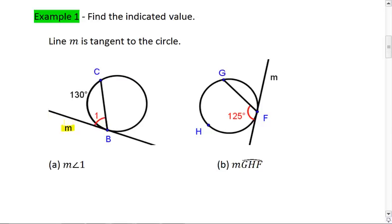For the first one, we know line m is tangent and CB is a chord, which means angle 1 is half of its intercepted arc, CB. Thus, the measure of angle 1 is half of 130, which gives us 65 degrees.